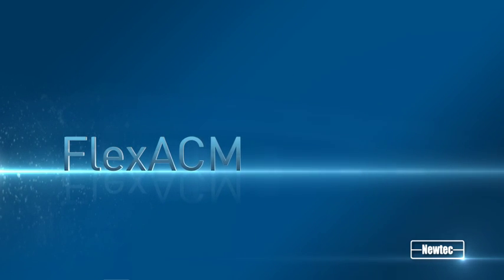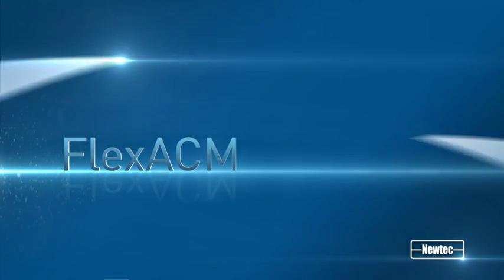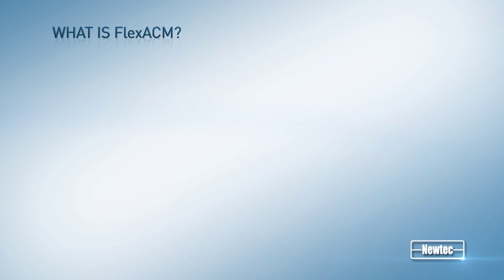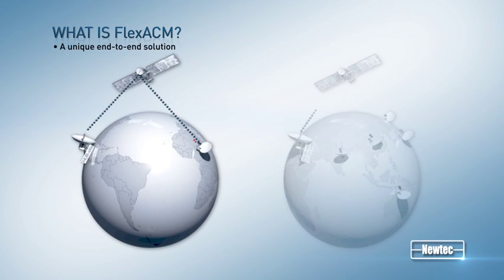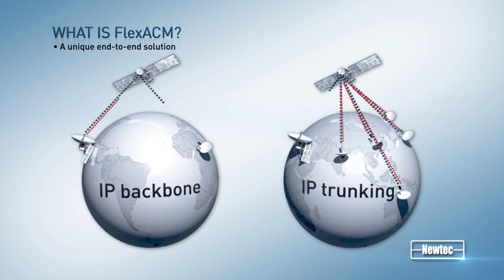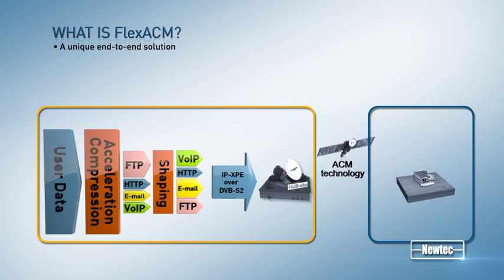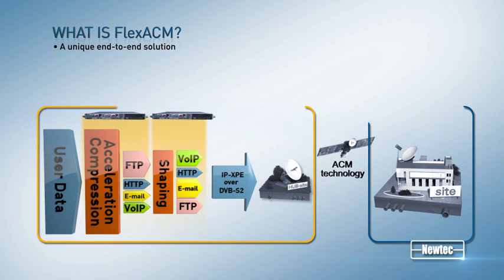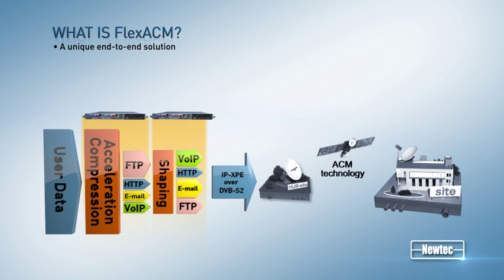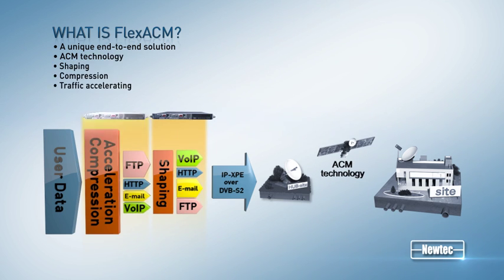That solution is what we call FlexACM. FlexACM is the unique end-to-end solution to optimize your IP backbone and IP trunking satellite links. FlexACM is the innovative combination of ACM technology, IP shaping, compression and acceleration to increase the efficiency of your satellite IP data communication.